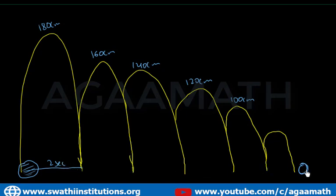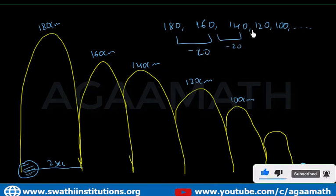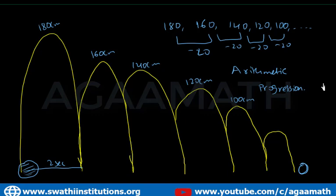To understand that, we need to know arithmetic progression. In the sequence 180, 160, 140, 120, 100, the difference is negative 20 each time — it is constant. Whether the difference is positive or negative, when the progression has a constant difference between two consecutive numbers, such a sequence is called Arithmetic Progression.